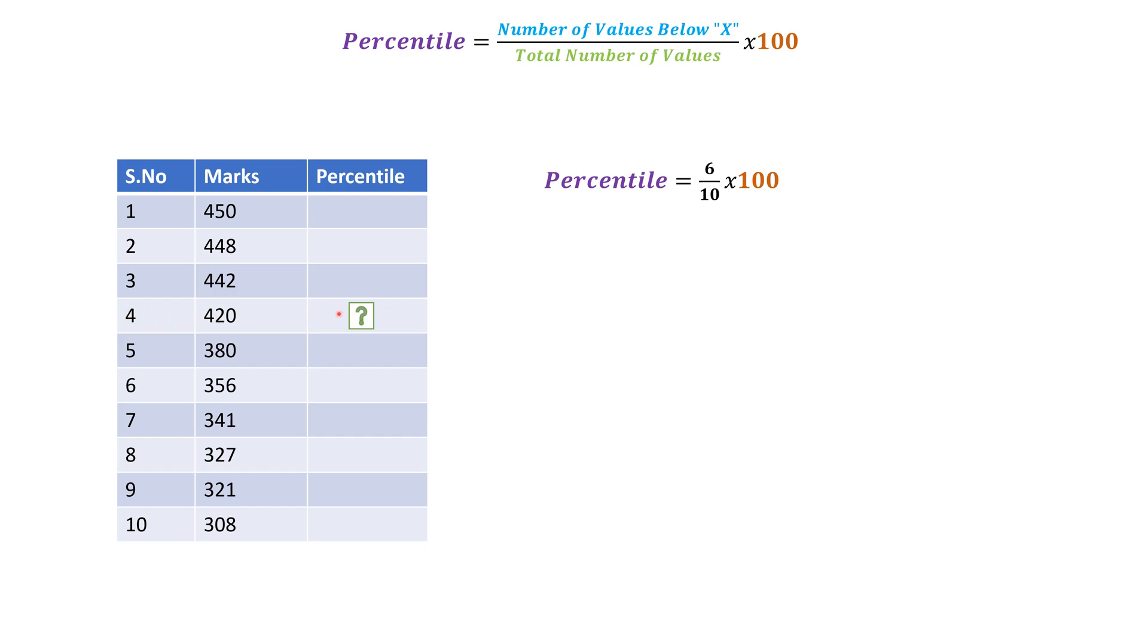As we are considering this particular candidate as X, we have to calculate how many candidates are below this particular candidate. There are one, two, three, four, five, and six - total six candidates below this candidate for whom we are calculating percentile. So six divided by total number of values, total numbers are 10.